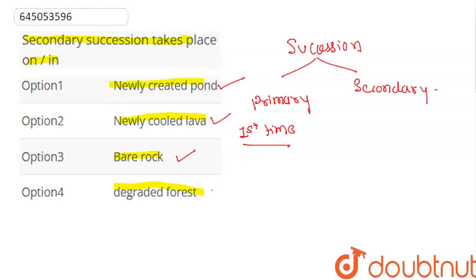But degraded forest is an example of secondary succession. Secondary succession example is degraded forest, meaning succession is happening a second time.